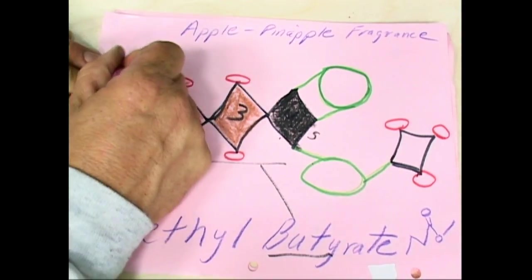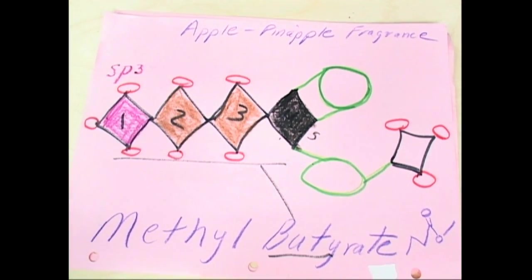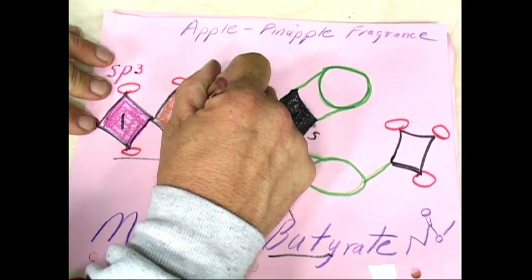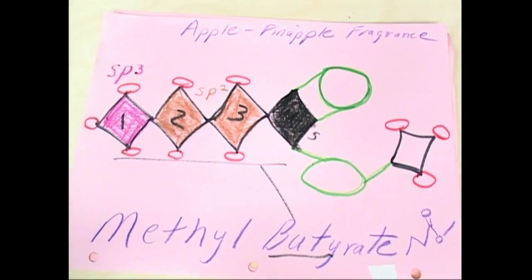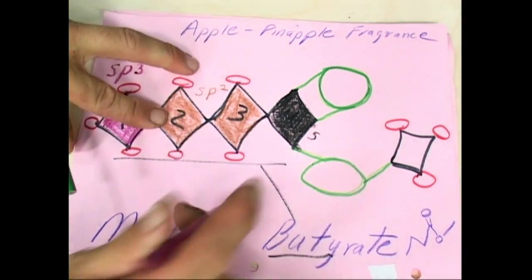These are called SP3. These were called SP2s. This is the real chemistry, kids. Each of these carbons has different character. Only one we're missing is the SP, which would be 1CH.